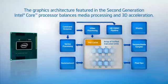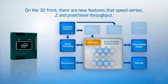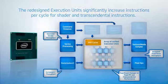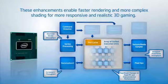On the 3D front, there are new features that speed vertex, Z, and pixel texel throughput. The redesigned execution units significantly increase instructions per cycle for shader and transcendental instructions. Combined, these enhancements enable faster rendering and more complex shading for more responsive and realistic 3D gaming.